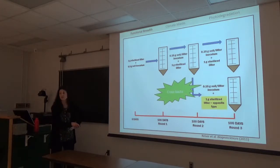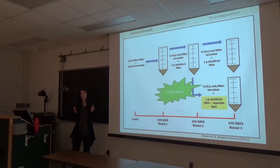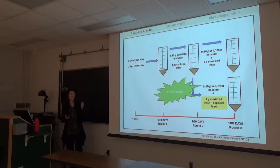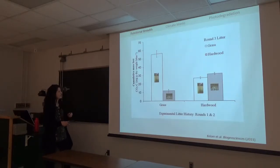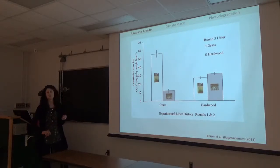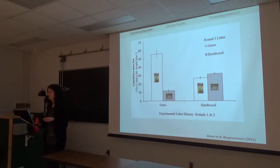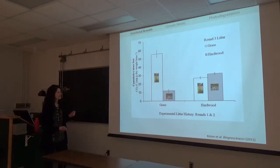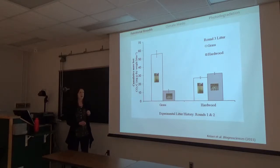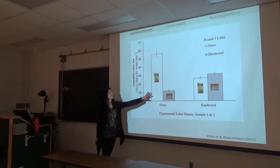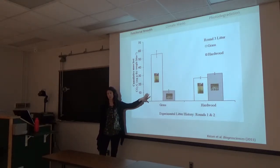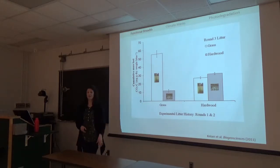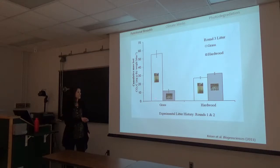On the x-axis is experimental litter history—what the community was exposed to for the first two 100-day rounds. The color of the bar represents the litter substrate for round three. For communities exposed to labile grass for 200 days and kept on grass, function was incredibly high—they were good at chewing up this sugary substrate. But if, after 200 days on something yummy, you're given the really tough rhododendron litter, function dramatically decreases by over two-thirds.